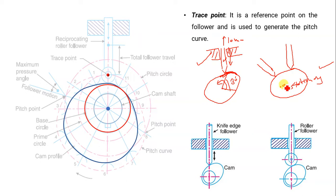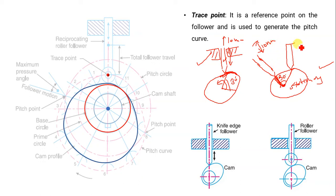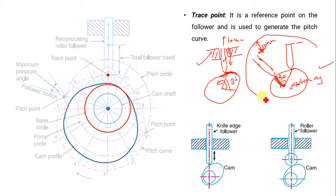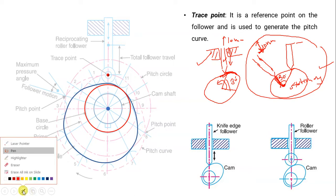In our design problem, this same condition should be satisfied. My center of rotation is here, and this is the initial position of the cam and follower. On this cam, if I measure an angle of 30 degrees and place the follower at that position, then the follower should move in this direction by 10 mm. So at the angle of 30 degrees, this follower is lifted by 10 mm in our design problem also. That is the approach we follow in designing the cam.